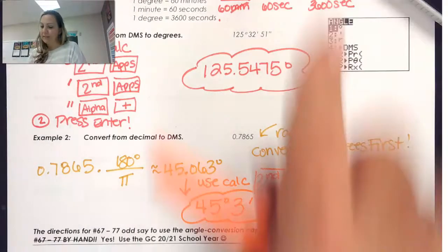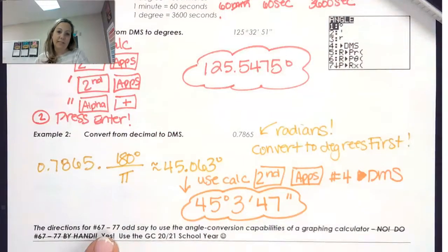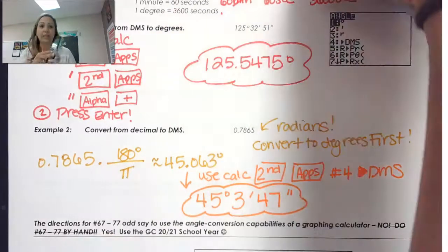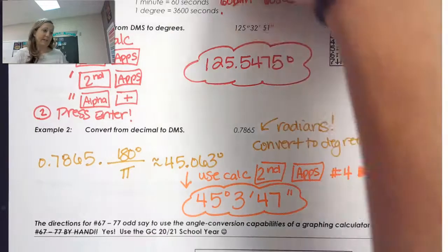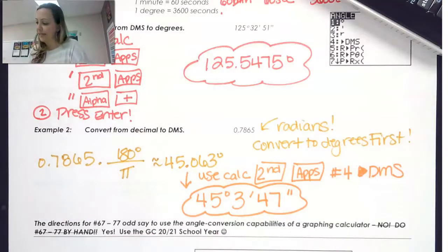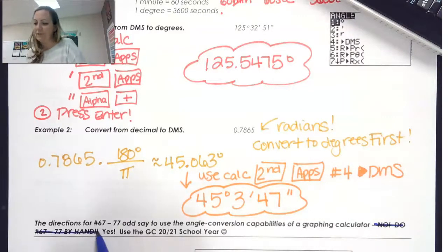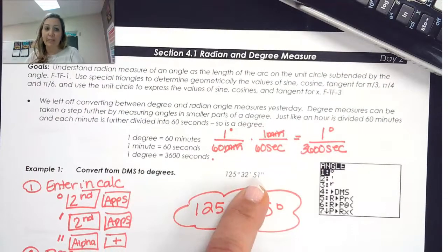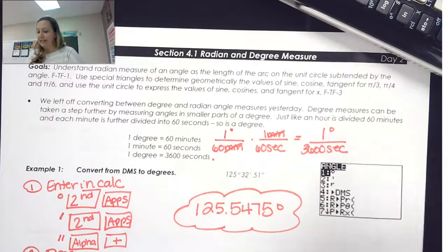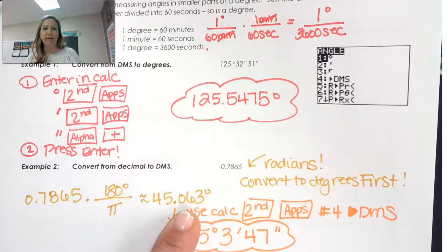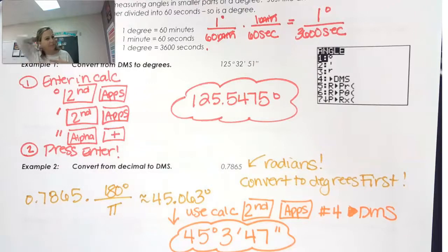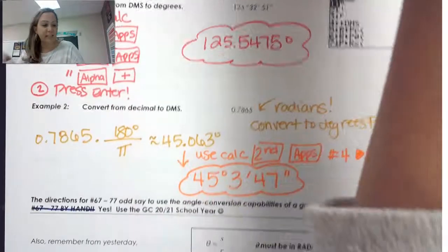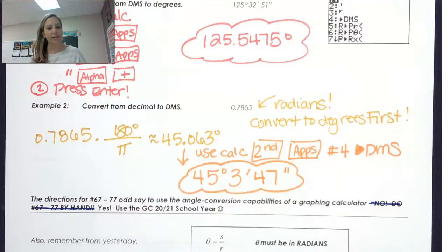The directions for problems 67 to 77 do say to use the angle conversion capabilities of the graphing calculator that we just looked at. You can also do it by hand — you'd convert the seconds to minutes, then minutes to degrees, and chop off the decimal parts. But the BC calc teacher says they never really see anything like that, so using the graphing calculator is fine.